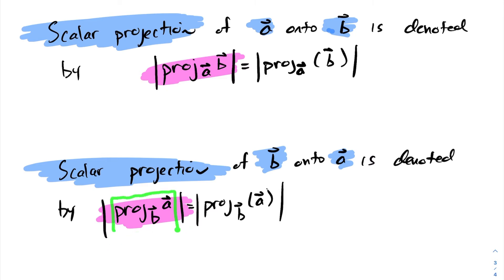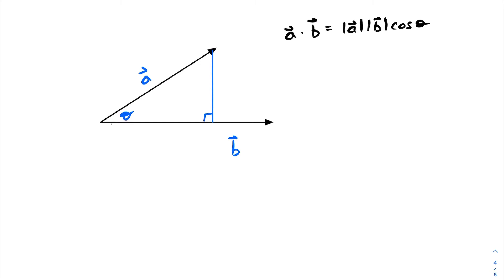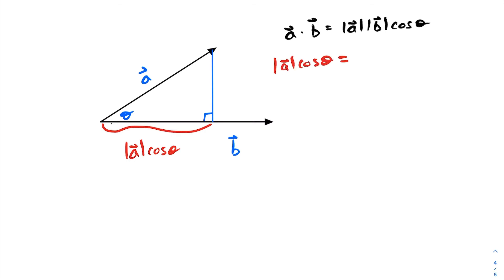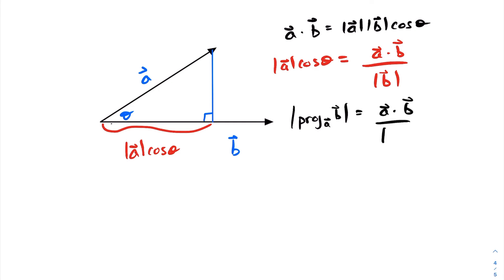We have yet to actually talk about the projection vector itself, only the scalar projection. Going back to our diagram on the projection of A onto B, notice that the length of this projection — the scalar projection of A onto B — was defined as the magnitude of A cosθ. Now, we know that A dot B equals the magnitude of A times the magnitude of B times cosθ. Therefore, isolating for the magnitude of A cosθ, we get: the magnitude of A cosθ equals A dot B divided by the magnitude of B. Therefore, the scalar projection of A onto B equals A·B over |B|.